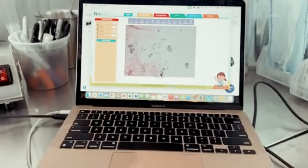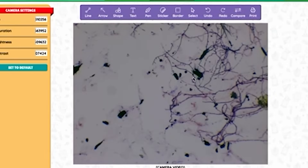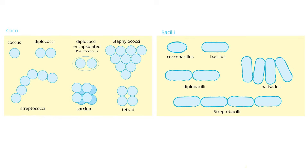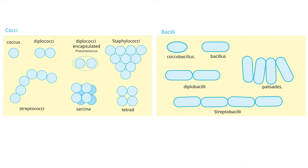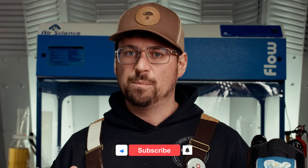The next level of classification is going to divide those organisms into their shapes. You will either have a cocci, which is a round spherical organism, or a bacillus, which is a rod-shaped organism, and that will further help classify. But to start, the gram stain is the most critical step in your investigation.